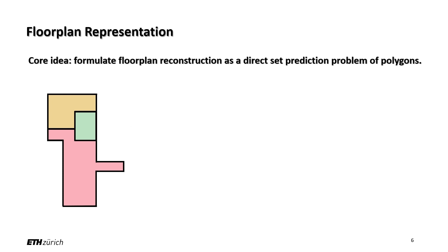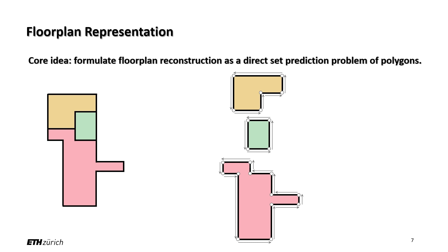Our core idea is to formulate the floor plan reconstruction as a direct set prediction of polygons. Each polygon represents a room and is modeled as an ordered sequence of vertices. Each floor plan consists of an arbitrary number of rooms and there is no natural order between them, so they are a set. Each room consists of an arbitrary number of ordered corners, so they are a sequence. Therefore, our goal is to predict a set of sequences of arbitrary lengths.